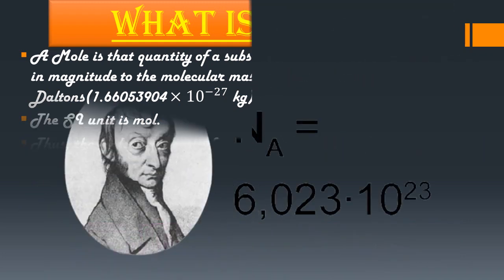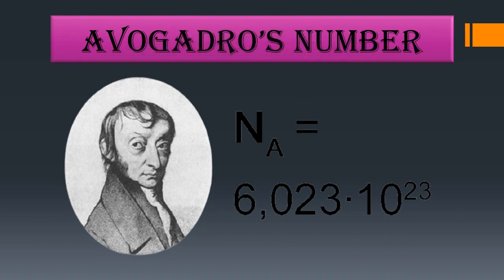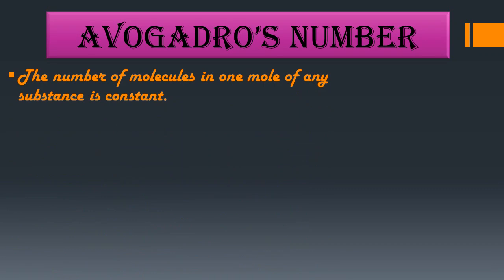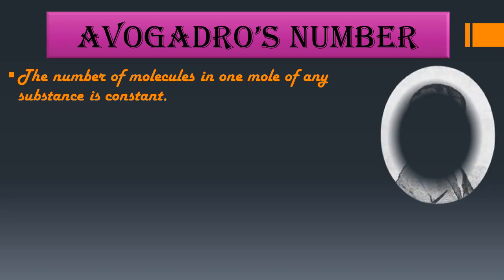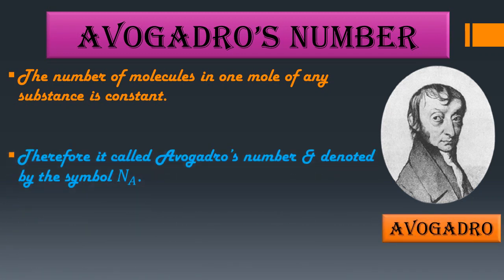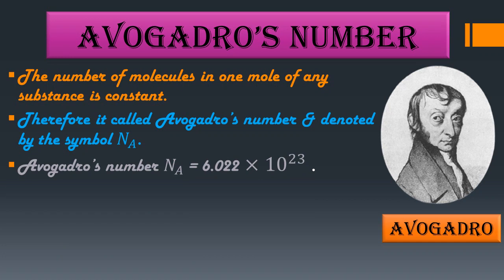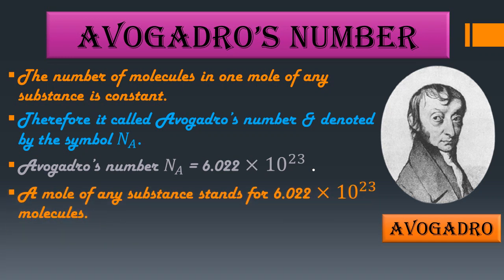Our next topic is Avogadro's number (Nₐ). The value of Nₐ = 6.022 × 10²³. The number of molecules in one mole of any substance is constant. The Italian scientist Avogadro did fundamental work on this constant, so this number is called Avogadro's number, denoted by Nₐ. A mole of any substance contains 6.022 × 10²³ molecules.